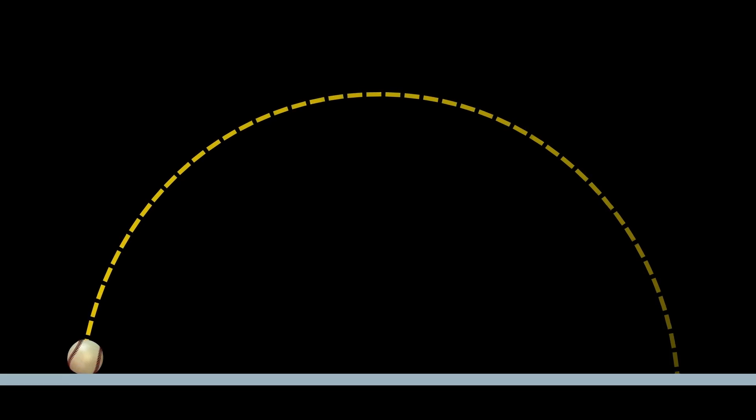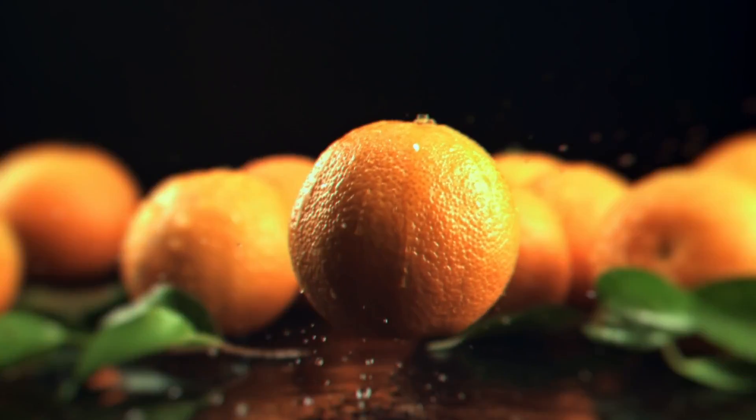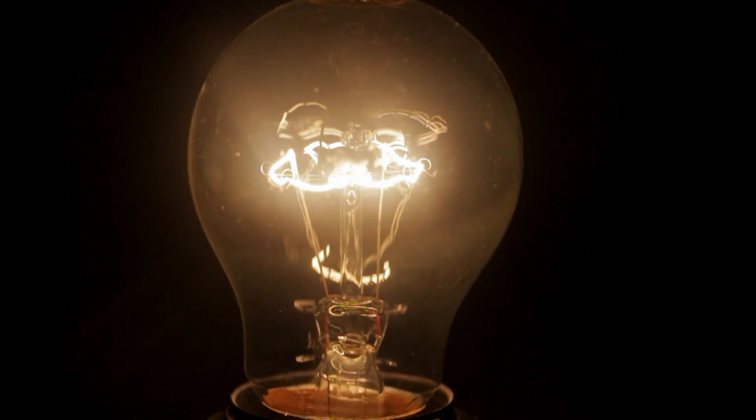This suggests that the trajectory of a thrown baseball, or similarly, the path of light, though seemingly influenced by gravity's pull, is an ever-changing straight line in the space-time distortion. This was a groundbreaking concept in understanding the behavior of light.